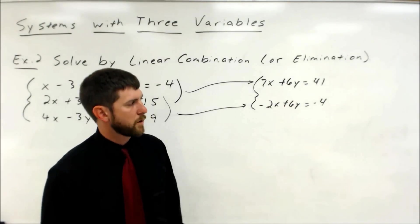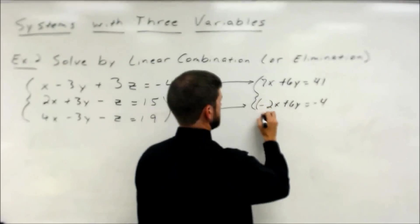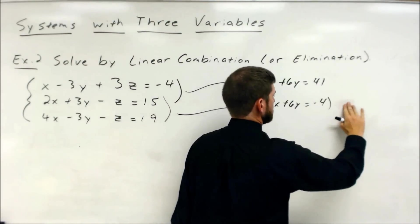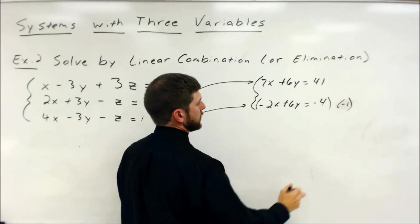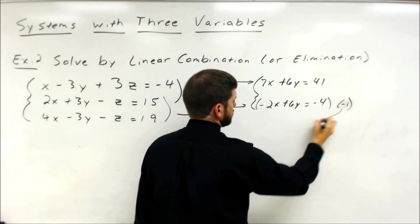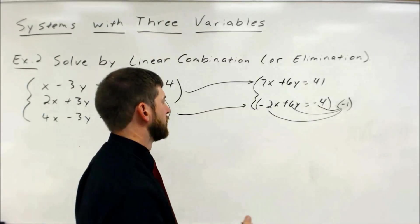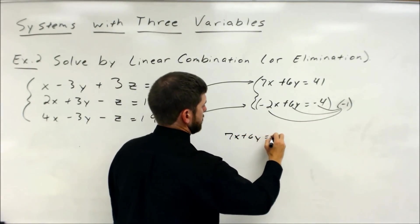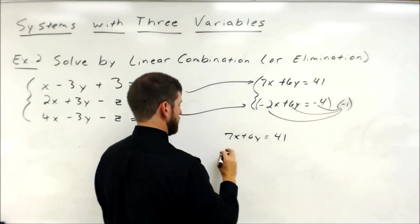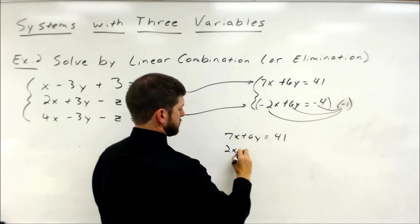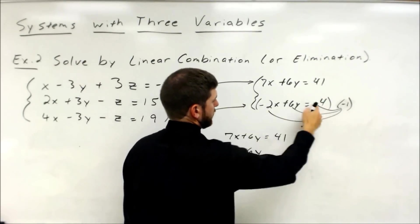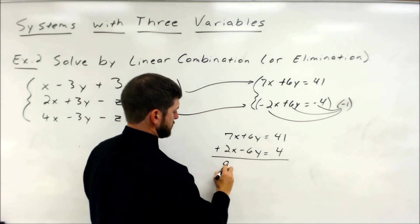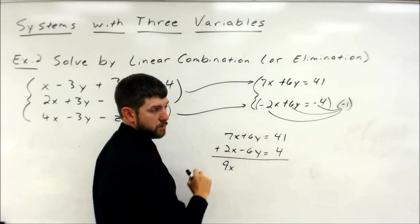You'll see how the y's both have a 6 for the coefficient. So very easily, I'm going to multiply by negative 1 on the end — because I'm just going to take this positive 6 and multiply it by negative 1 to make it a negative 6. First equation stays the same: 7x plus 6y equals 41. Multiplying by negative 1: negative 1 times negative 2x is 2x, negative 1 times 6y is negative 6y, negative 1 times negative 4 is 4. Now: 7x plus 2x is 9x. Positive 6y and negative 6y cancel. 41 and 4 gives 45.